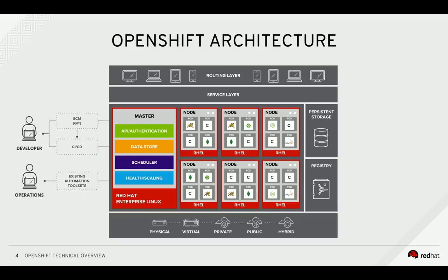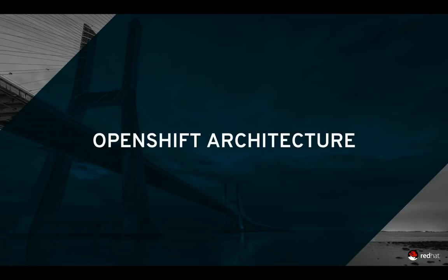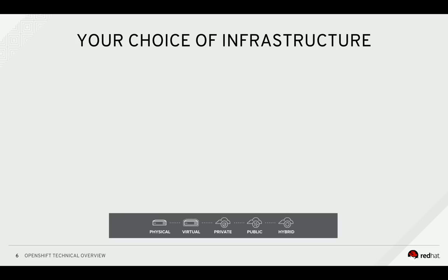At 10,000 feet, this is what an OpenShift cluster looks like. This may appear complex, but OpenShift provides an experience that abstracts users from the complexities of the underlying technology. OpenShift is fully supported anywhere that Red Hat Enterprise Linux is. Hybrid deployments across multiple infrastructures can be achieved, but many customers are still adopting OpenShift inside their existing, traditional, virtualized environments.